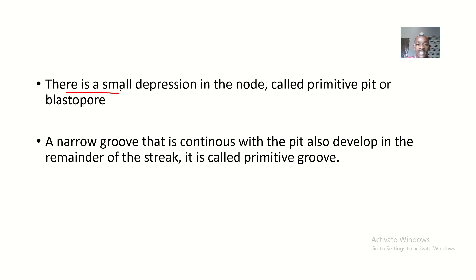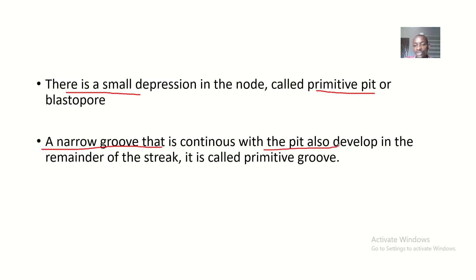There is a small depression in the node called the primitive pit, or blastopore. A narrow groove that is continuous with the pit also develops in the remainder of the streak, and this is called the primitive groove.